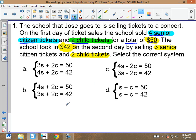So we're just going to put those together. Four senior plus two child equals $50. Three senior plus two child equals $42. So which one of these matches what we wrote? A, B, C, or D? B. B is the correct answer.